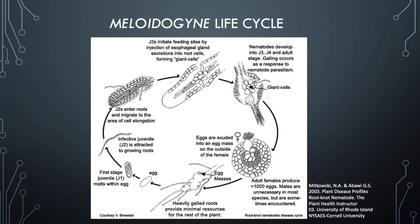Let's look at the Meloidogyne life cycle. We begin with the egg and the developing first stage juvenile that molts within the egg. When it hatches, it is at its infective juvenile stage, the J2. These are attracted to the growing roots that they will feed on. The J2 enters the root and migrates to the area of cell elongation within the roots. Once it arrives at a suitable feeding site, it injects its esophageal gland secretions into the root cells, and this begins to form the giant cells. This is where the galls will grow as a result of cell swelling and cell multiplication.